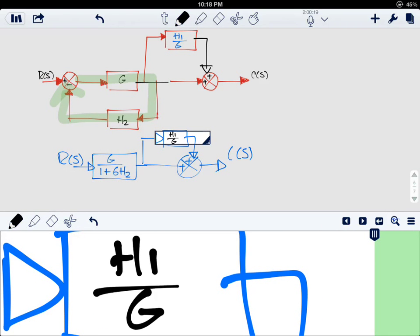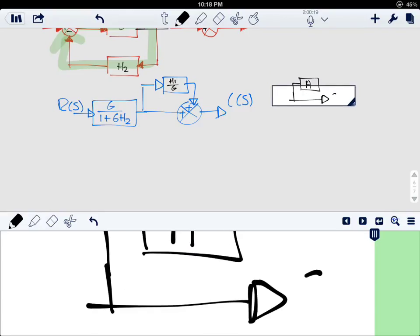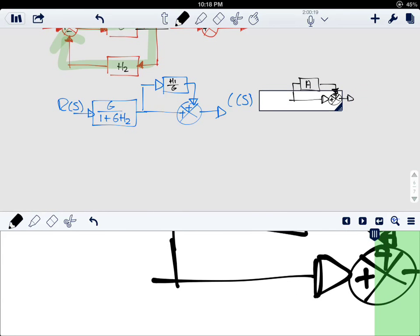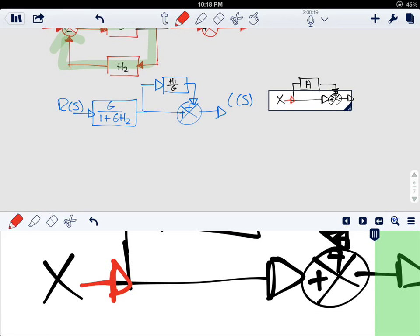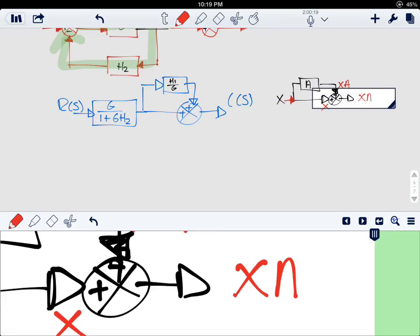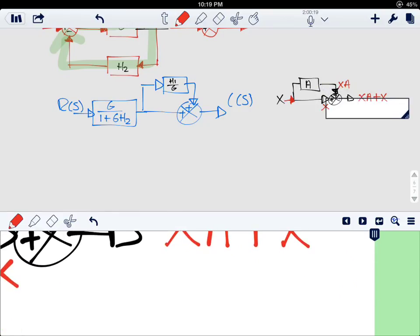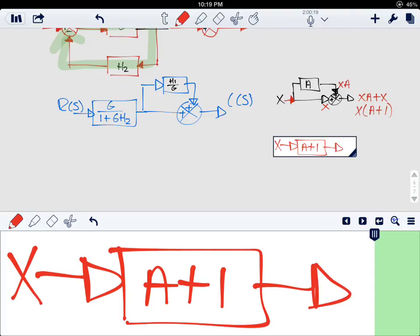Now, if I have, say, A here, and say I have an X here, I'll be seeing here X, but here I'll be seeing X times A. The output will be X A plus X, which is the same as X times (A plus 1), so I could simplify that into A plus 1. I have the same input and I will have the same output here.